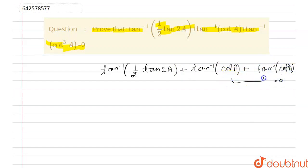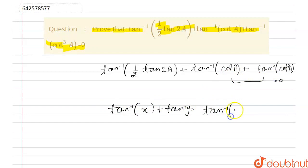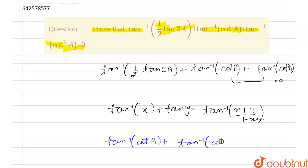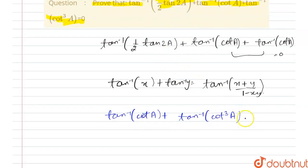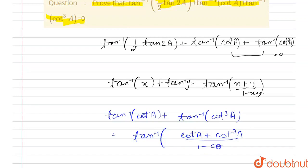We can apply the tan inverse x plus tan inverse y formula on tan inverse of (cot a) and tan inverse of (cot³a). The formula is: tan inverse x plus tan inverse y equals tan inverse of (x + y) divided by (1 − xy). Applying this, we get tan inverse of (cot a + cot³a) divided by (1 − cot⁴a), while tan inverse of (1/2 · tan 2a) remains the same.